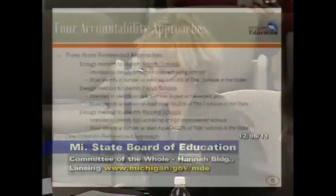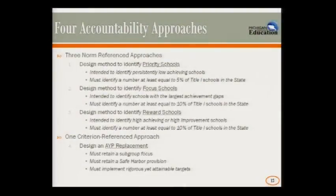This is the one where we changed significantly from the technical assistance meeting to where we are now with our thinking. There are actually four approaches that the U.S. Department of Education is asking us to take: three norm-referenced approaches to accountability and then one criterion-referenced approach. The norm-referenced approaches look at how schools are doing compared to each other, while the criterion-referenced approach looks at how schools are doing compared to a particular set standard.